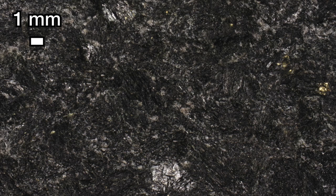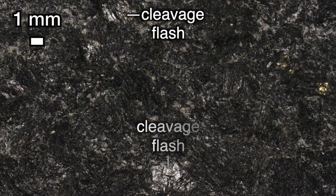Most of its grains, comprising its matrix or groundmass, are larger than a quarter millimeter in diameter and as large as about four millimeters. Grain size can be estimated by observing the size of the flashes of reflected light from cleavage faces when you rotate the specimen in the light.